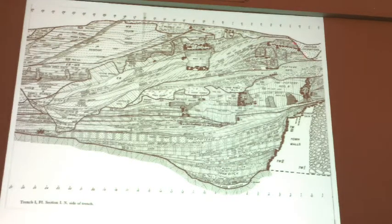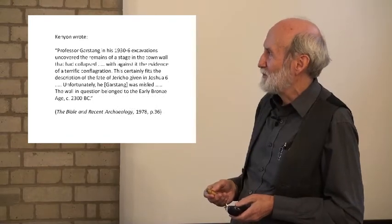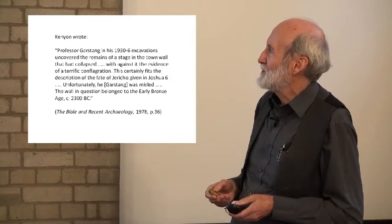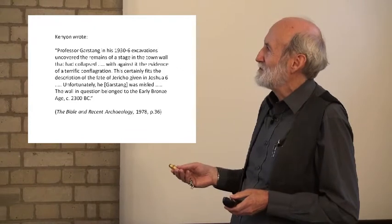Kenyon's people actually drew that side of the trench and all the different strata in it: Neolithic down here, Early Bronze Age here with one wall conglomeration and the other wall, the Middle Bronze layers up here. Kenyon wrote: 'Professor Garstang in his 1930-36 excavations uncovered remains of a stage in the town wall that had collapsed, with evidence of a terrific conflagration. This certainly fits the description of the fate of Jericho given in Joshua 6. Unfortunately Garstang was misled—the wall in question belongs to the Early Bronze Age circa 2300 BC.' Garstang was right about the wall being destroyed by Joshua but wrong that it was Late Bronze Age. Kenyon was right that the walls were Early Bronze Age but wrong in denying that they were Joshua's.